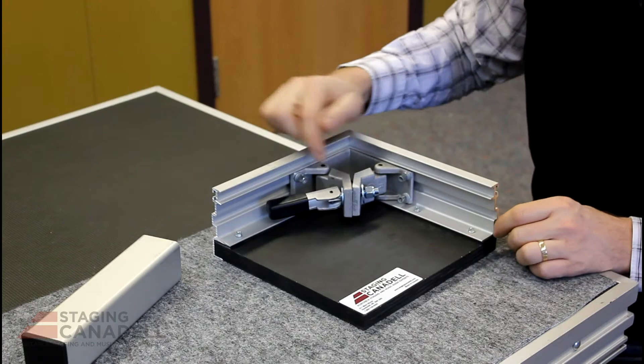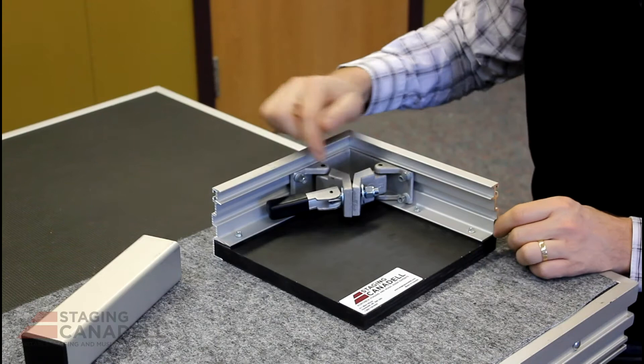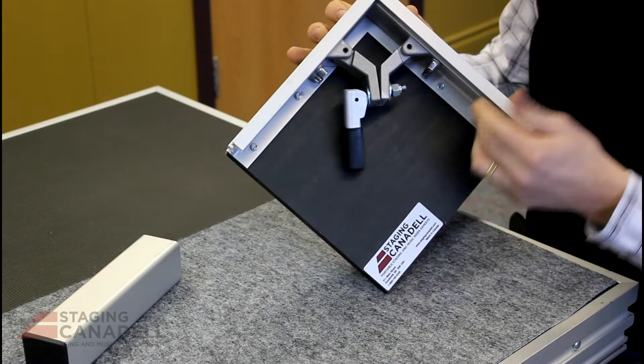This is the underside of the stage showing the corner clamp mechanism. This is the clamp handle or over-center cam latch. It has 3/8 inch hardware so the nut uses a 9/16 inch wrench. These are the two clamping wings. This ultimately is what holds your leg in place.